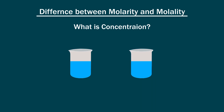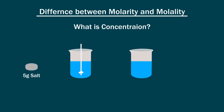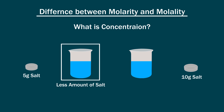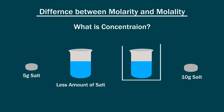Take equal amounts of water in 2 beakers. We add 5 grams of table salt in the first beaker and dissolve it with a stirrer to form a solution. While we add 10 grams of table salt in the second beaker and also dissolve it with a stirrer to form a solution. We know that this solution contains less amount of salt, while this solution contains more amount of salt.